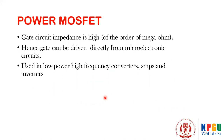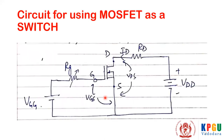The gate circuit impedance is very high, in the order of mega ohms. Hence, the gate can be driven directly from a microelectronic circuit. This makes it suitable for use in low-power, high-frequency converters, which we'll see about later.